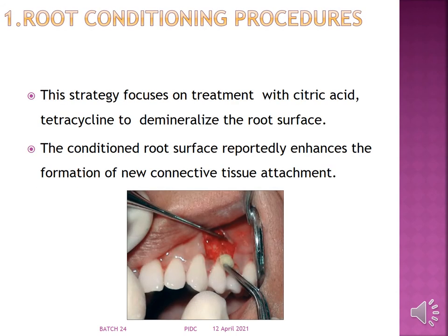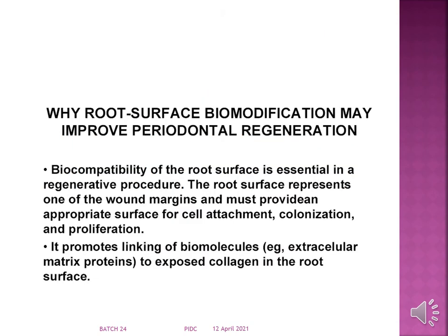Starting with root conditioning procedures, this strategy focuses on treatment with citric acid or tetracycline to demineralize the root surface. The conditioned root surface reportedly enhances the formation of new connective tissue attachment. So why might root surface biomodification improve periodontal regeneration?